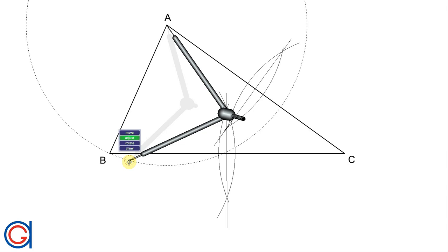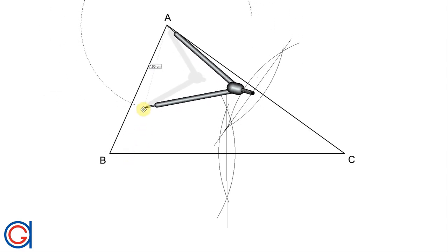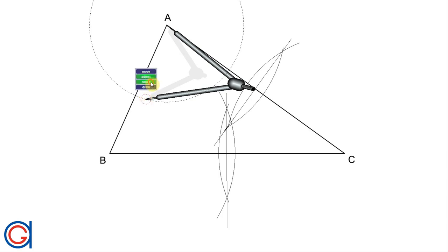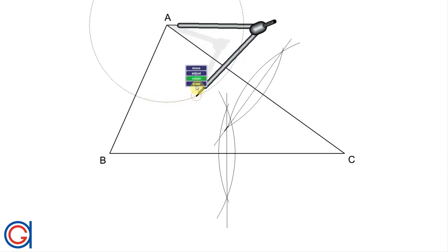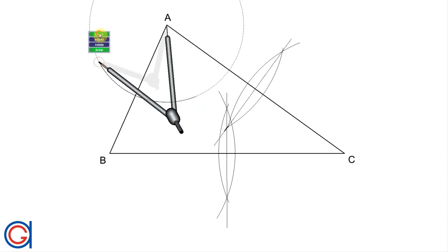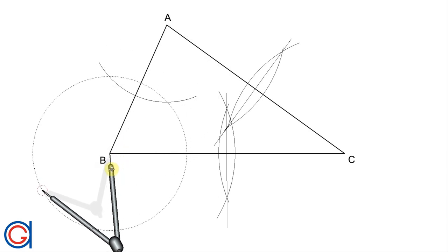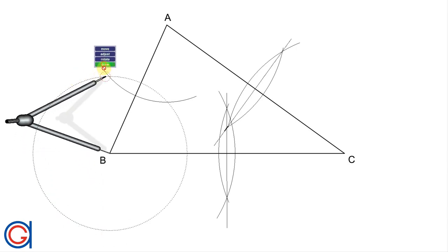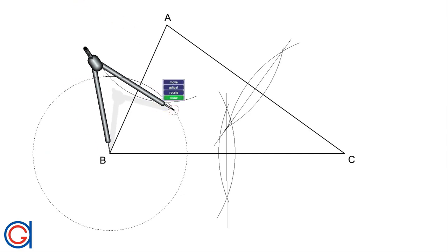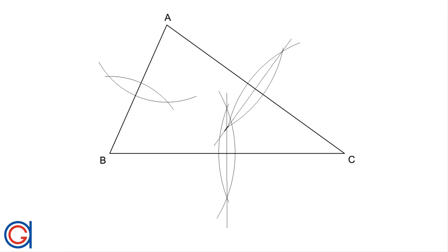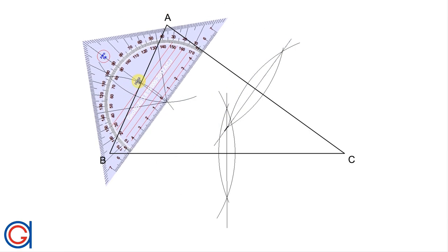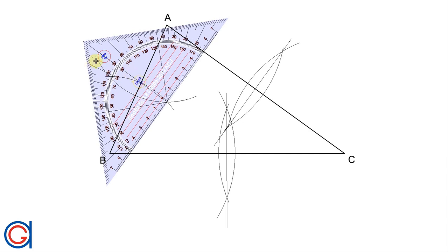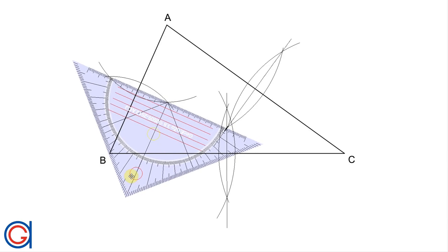Again setting our compass on A and setting the radius of the compass slightly longer than the line segment AB, we are going to scribe two more arcs. Here is our first arc and now setting our compass on vertex B and with the same radius, we scribe another arc to intersect the previously drawn arc at two points. So now if we have been working with precision and accuracy this perpendicular bisector of AB should cut the previous two perpendicular bisectors at the same point as can be seen here, which is our circumcenter point.